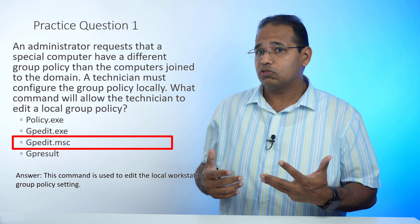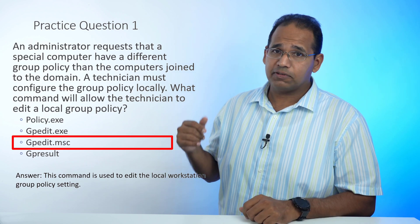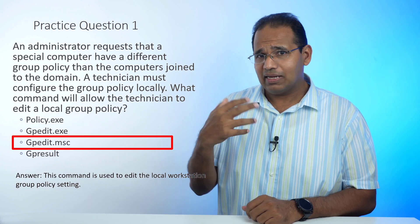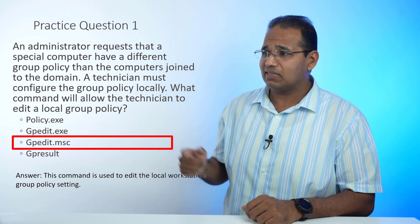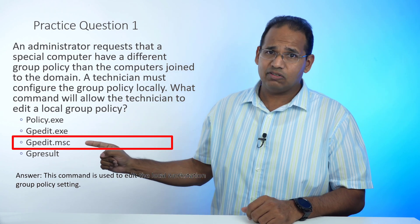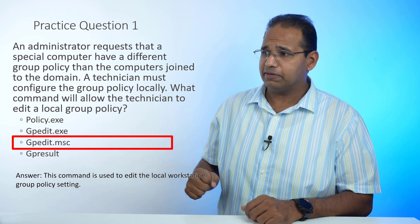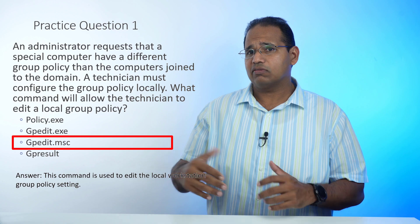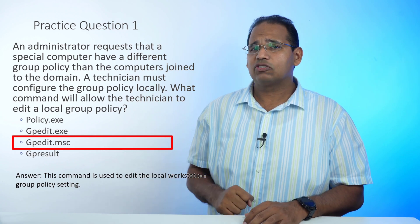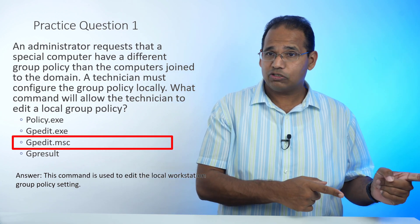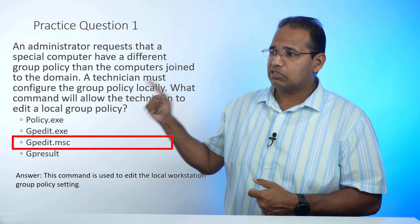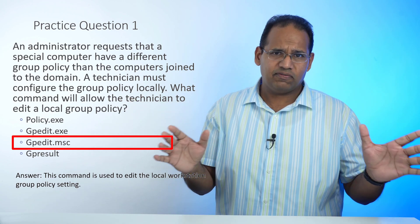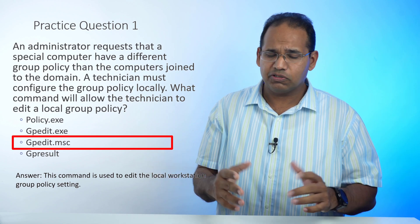In the course, I go over this in depth — covering the MMC console, how to add and remove snap-ins, and this command gets you directly to the group policy editor. gpresult is a command used in the command prompt to see what policies are applied to your computer. There's no such thing as policy.exe or gpedit.exe, so beware of fake tools being used on your exam.